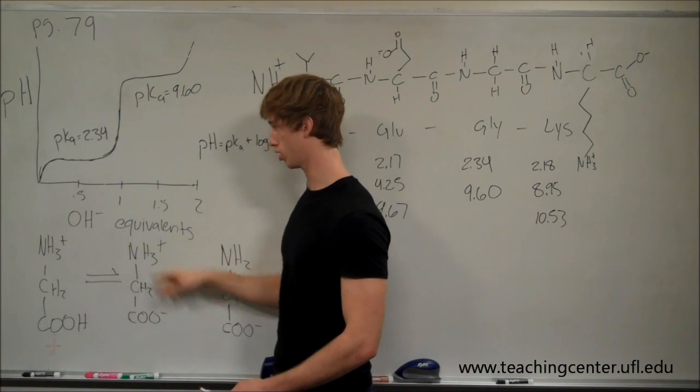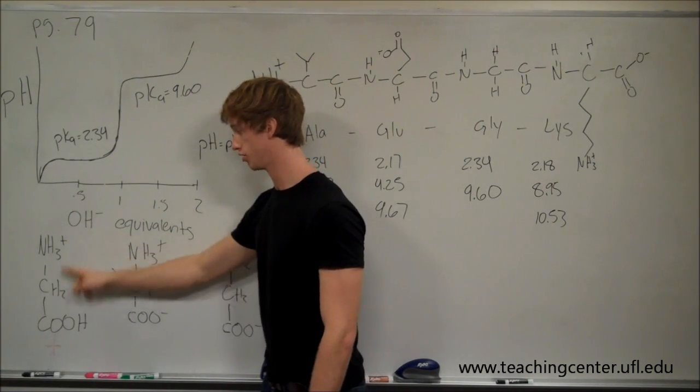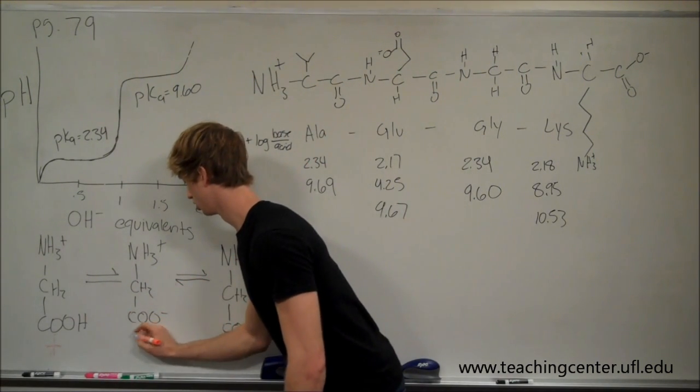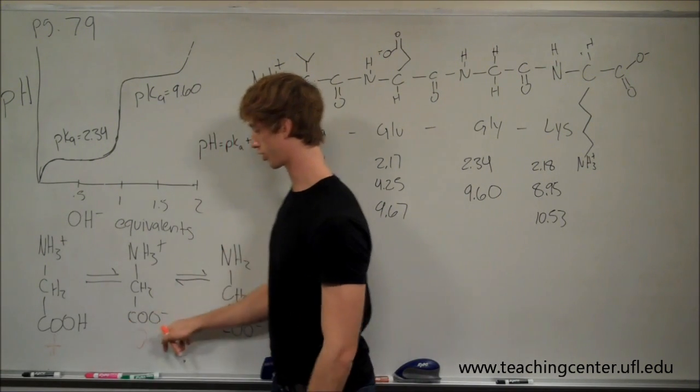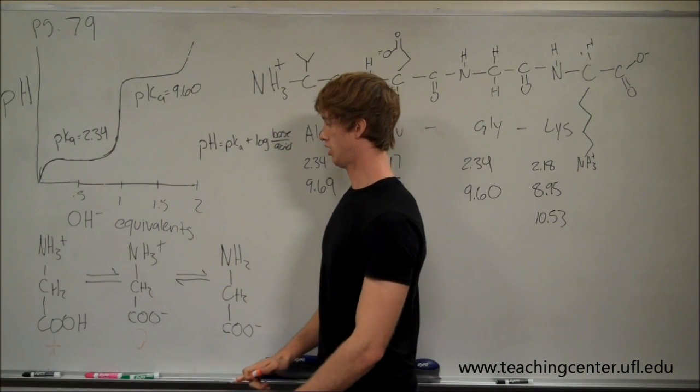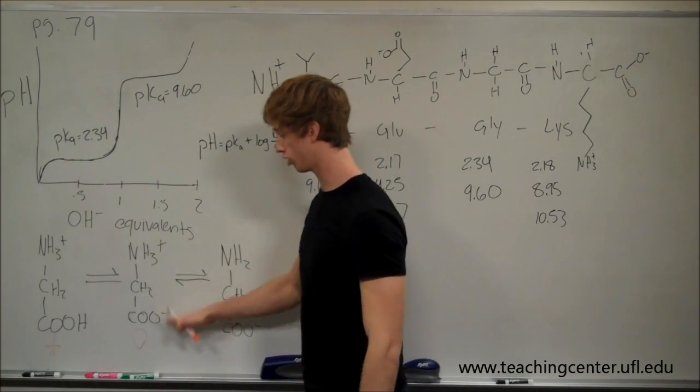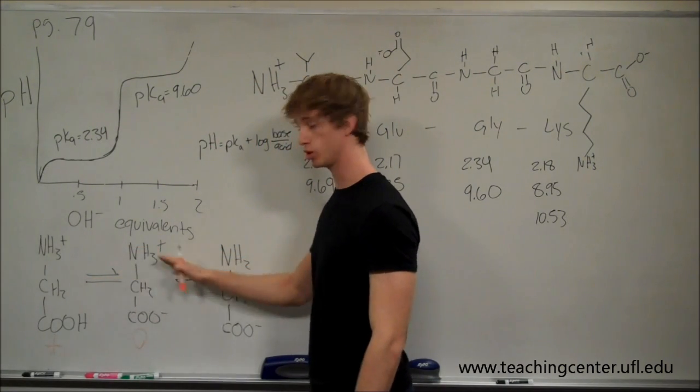It's going to get this buffer region. It's going to start tearing protons off of this positively charged species to make a neutral species of glycine by taking this proton off the carboxylic acid group. So that keeps going, you add enough hydroxide until all of this positive species has been transformed into a neutral species.